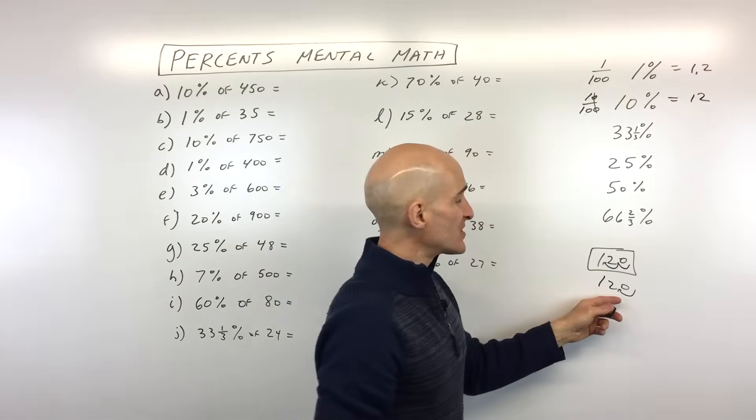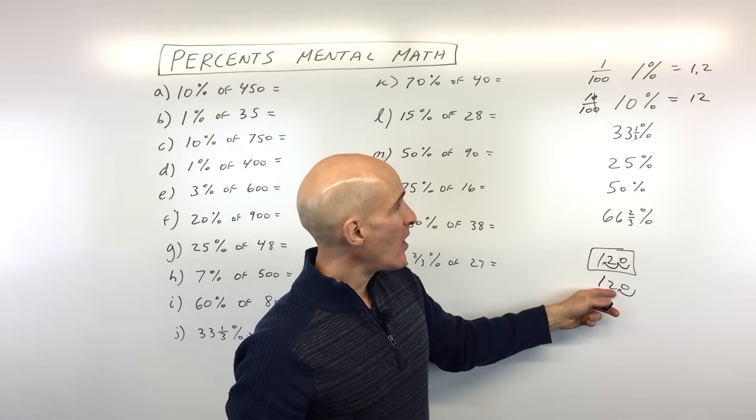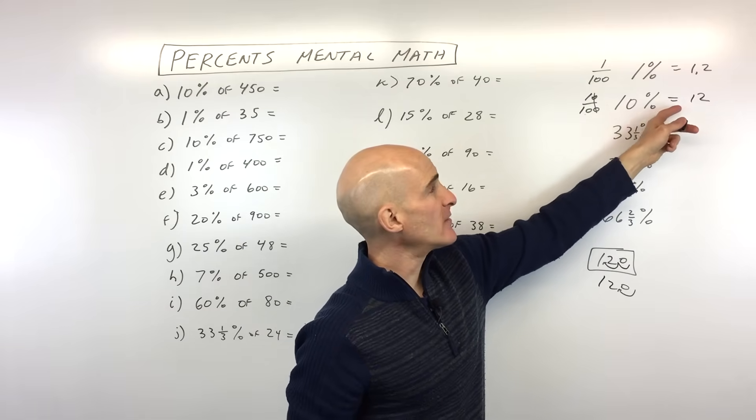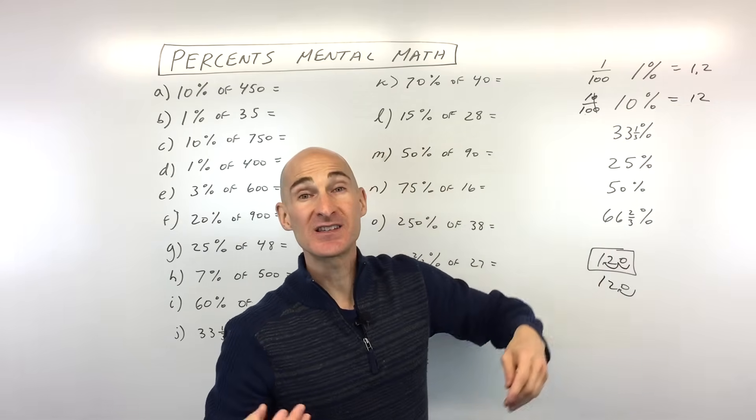What would 20% of 120 be? Well, if 10% is 12, 20% would be twice as much. It'd be 24. If it was 30%, it'd be three times as much. It'd be 36, et cetera.